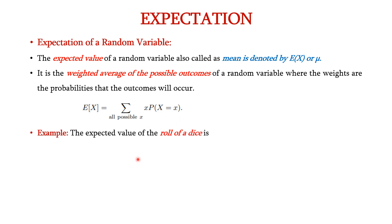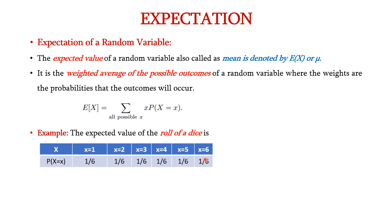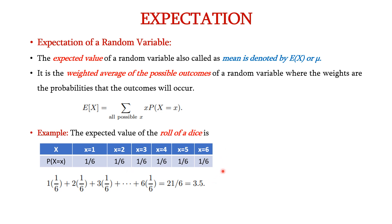Let us see an example for calculation of expectation. Consider the rolling of a dice. The expected value for the rolling of a dice can be calculated as shown here. So x contains the possible values it can take for rolling of a dice, so it is from 1 to 6. The probability of getting 1 in rolling of a dice is 1 by 6, 2 is 1 by 6, likewise up to 6 we are representing.